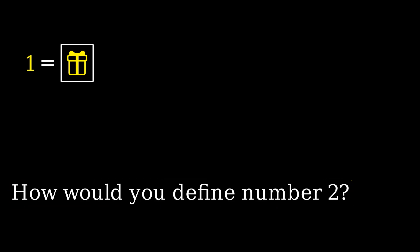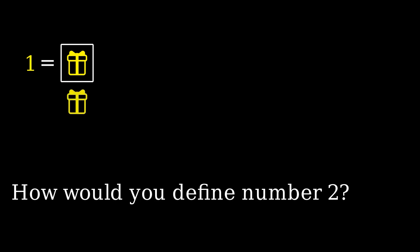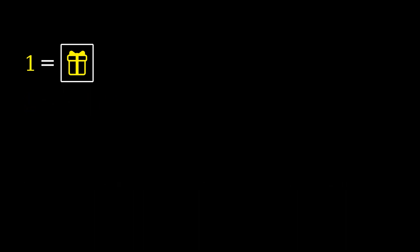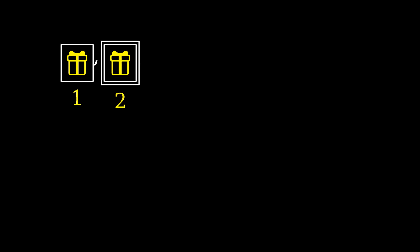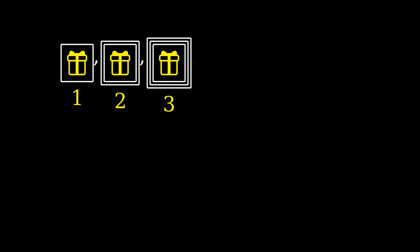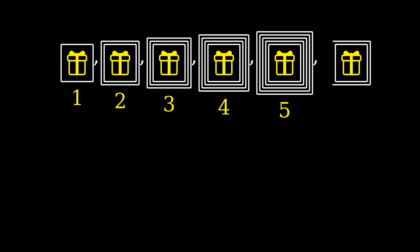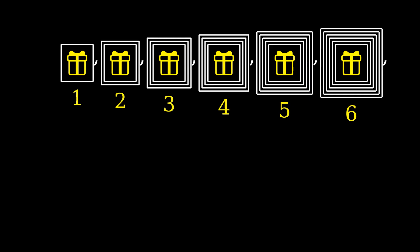And then, how would you define number two? You may think about putting two copies of your package inside a box and call that number two. But in the theory of sets you're not allowed to put more than one copy of an element inside the same box, so this would still be number one. So if one is your object with a box around it, it may occur to you to define number two as your object with two boxes around it, number three with three boxes around it, number four with four boxes around it, and so on and so forth. And then you could define the natural numbers as the set of all these numbers.